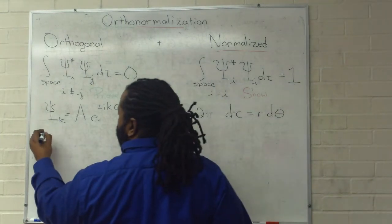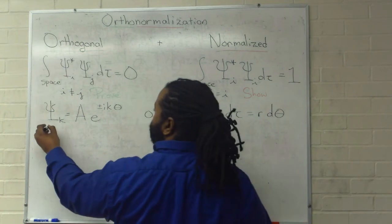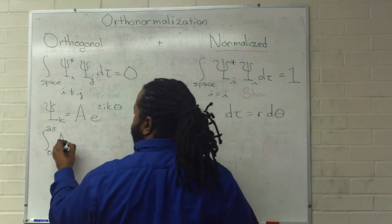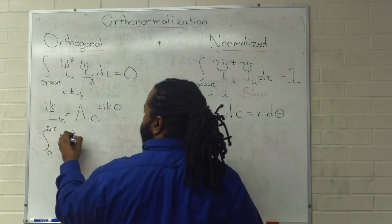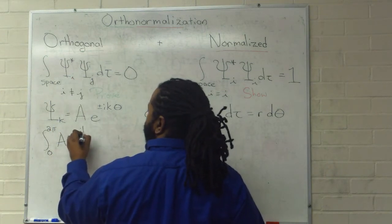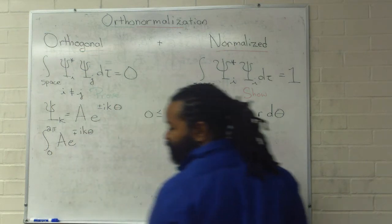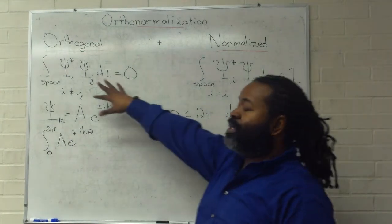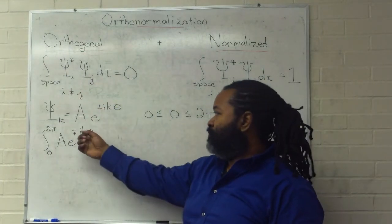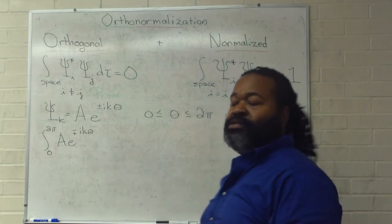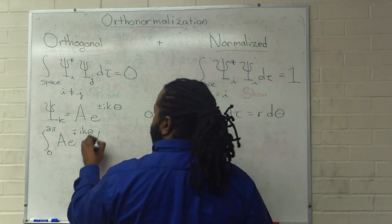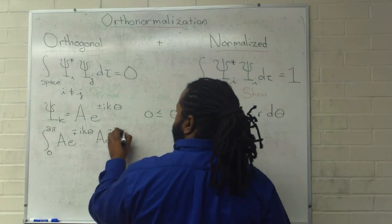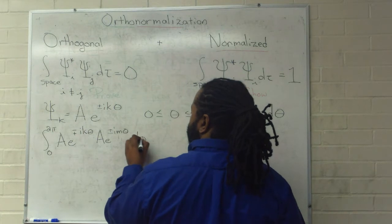In the case here, we can substitute in, knowing that we integrate from 0 to 2 pi. And we're going to have a e to the minus plus i k theta. And because we want to show orthogonality, we're going to use something other than k for the second one. So, the second one will be a e to the plus or minus i m theta. This is r d theta.